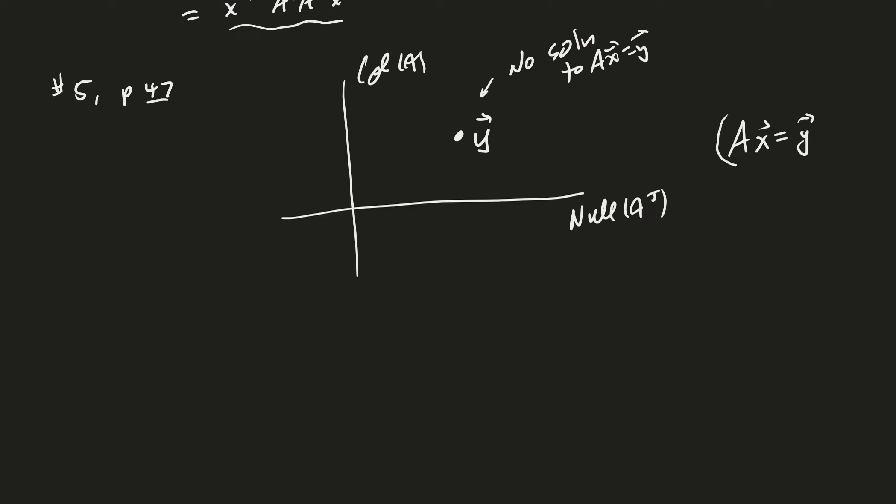Therefore, there is no solution to AX equal Y. Why is that? A times X is a linear combination of the columns of A, right, using the constants in X, or using the weights in X. And so, by definition, almost, right, for this to have a solution, A times X has to be in the column space of A. And so, in this case, it's not. And so, therefore, we try to orthogonally project it into the column space of A,